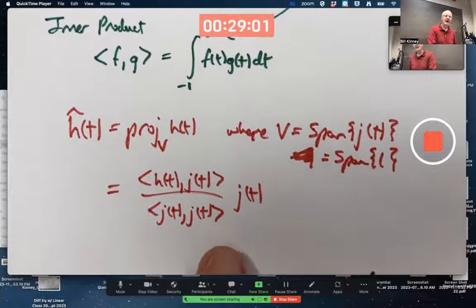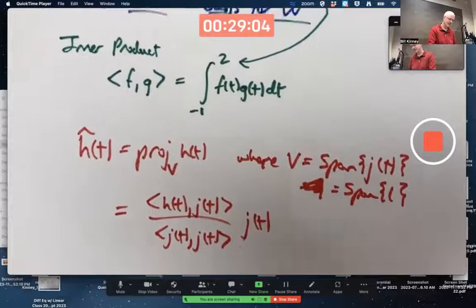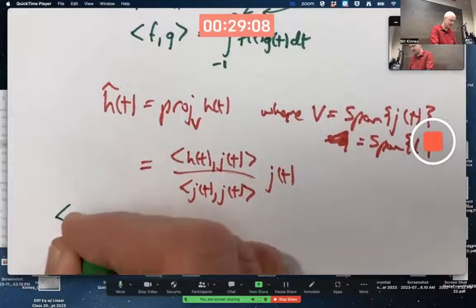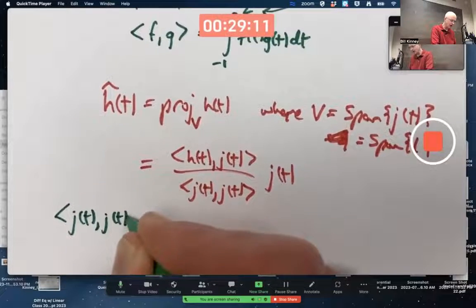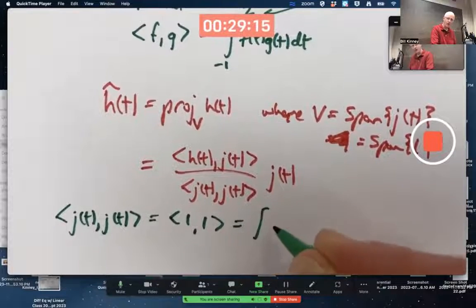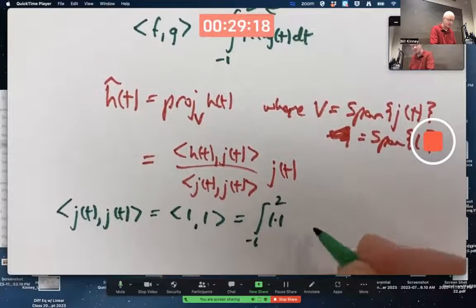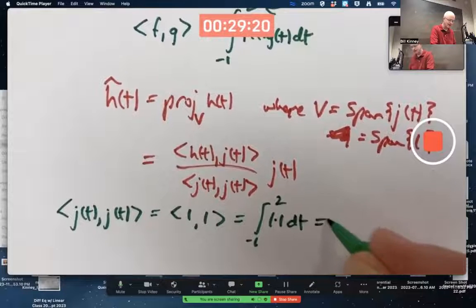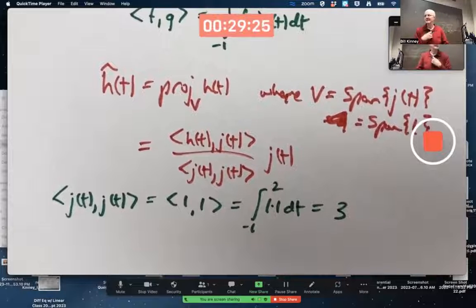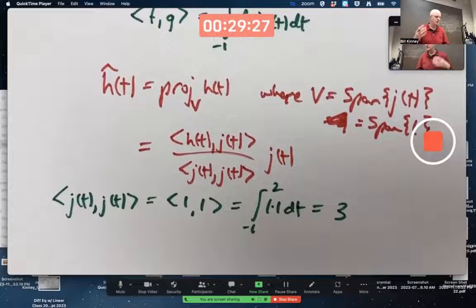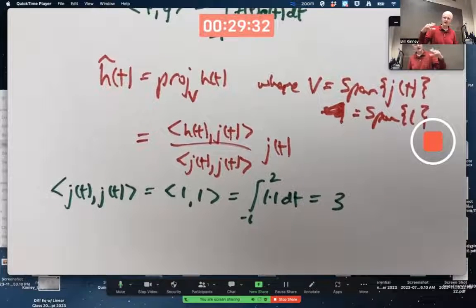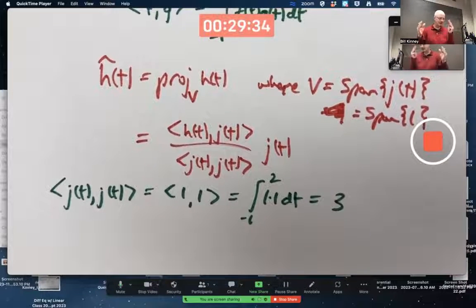But to compute these inner products, I got to do some integrals. Well, it's not too hard in this case. Inner product of J with itself, J is the constant function of one. I'm integrating one times one from negative one to two. That's three. I'd get T and evaluate T from negative one to two. Two minus negative one is three. The area under a horizontal line with height one from negative one to two is three.